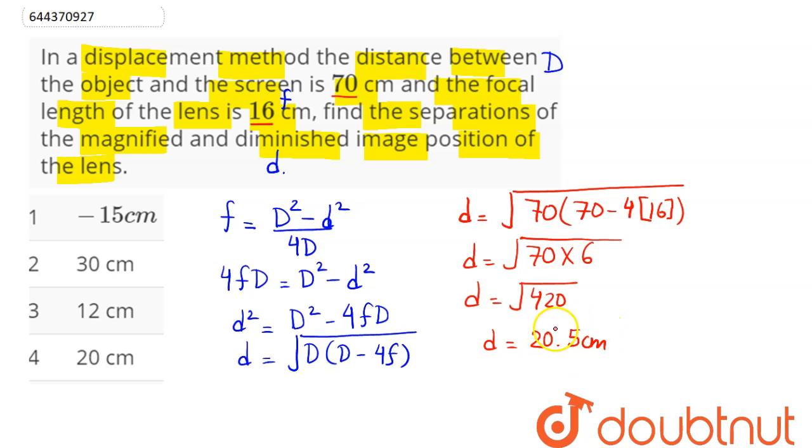The distance of separation between the magnified and diminished image positions is 20.5 centimeters. Among the four options, the nearest is option 4, which is 20 centimeters. Hence, 4 is the correct answer.